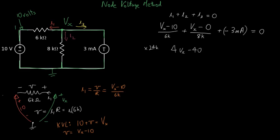This gives me 4Vx minus 40 plus 3Vx minus 24 times 3 is 72. Notice that the milliamps multiplied by 24,000 ohms converts to a voltage.